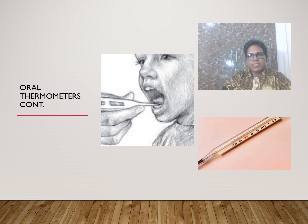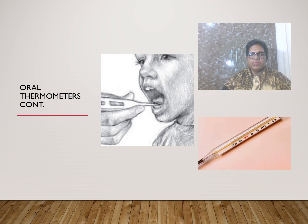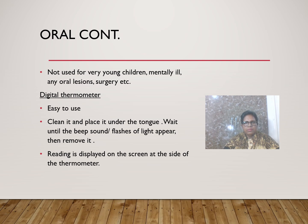Here you can see a thermometer placed under the tongue, and also a mercury glass thermometer. The thermometer has three parts: a bulb, a neck, and a stem. There is also a digital thermometer, which can be placed under the tongue to take temperature.